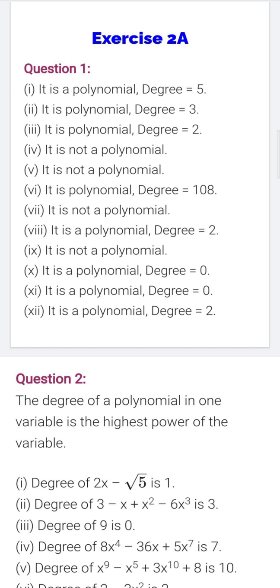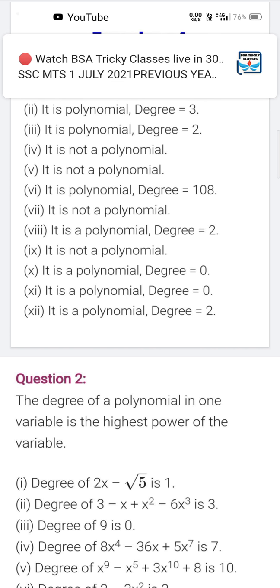So in the sixth part, x to the power 108 is given. 108 power is given, which is a whole number, so it will be considered as a polynomial of degree 108.